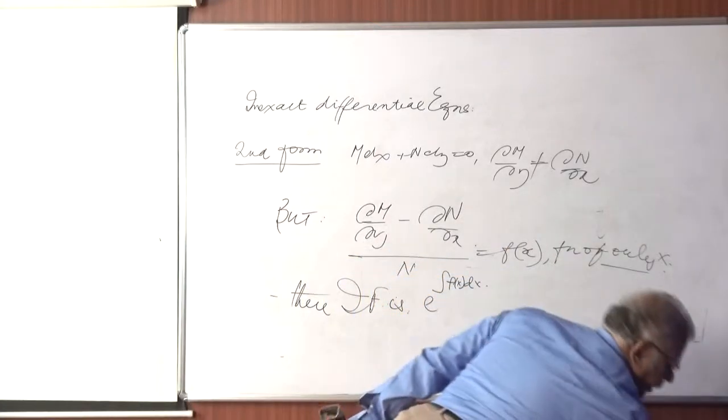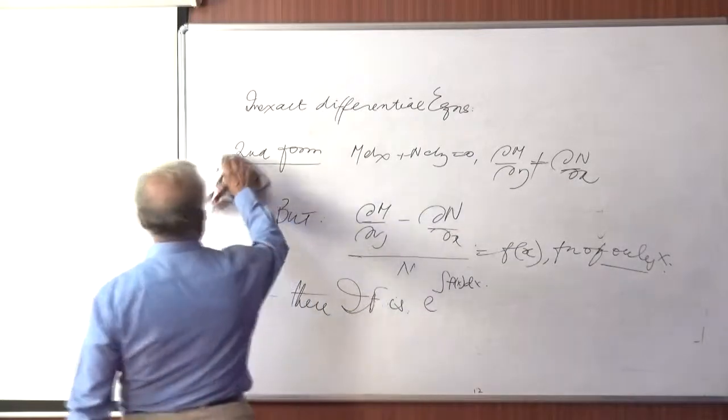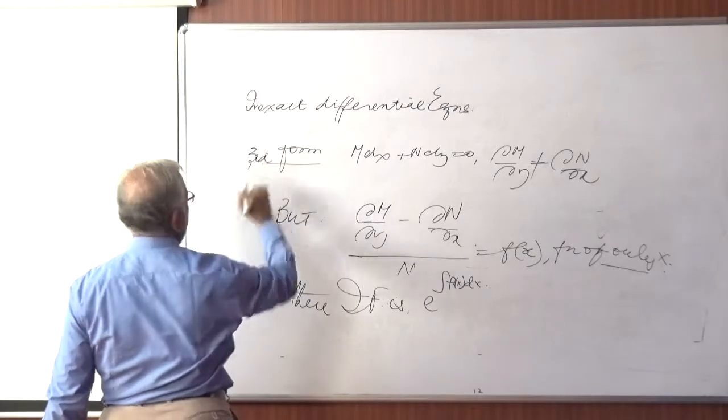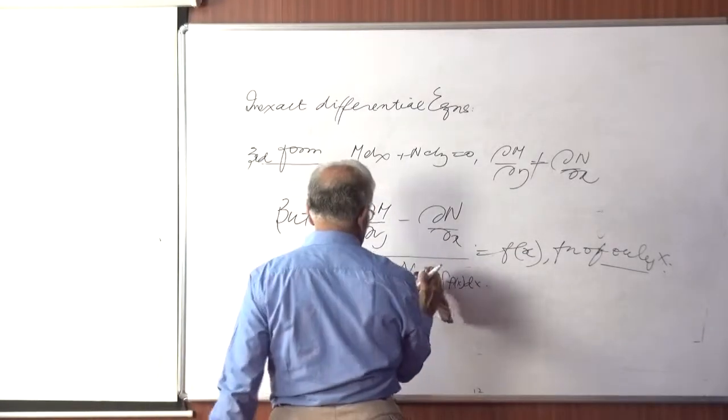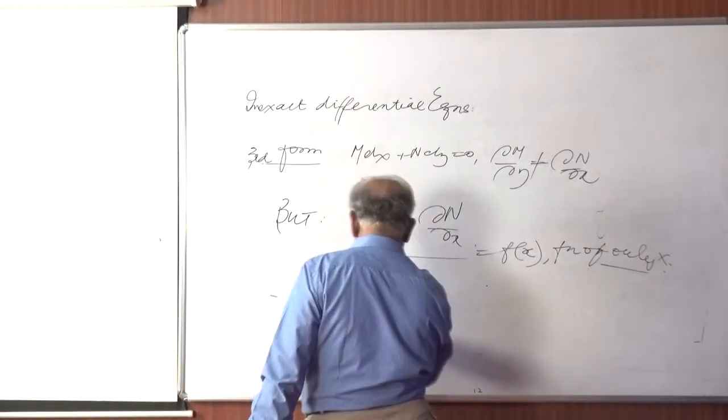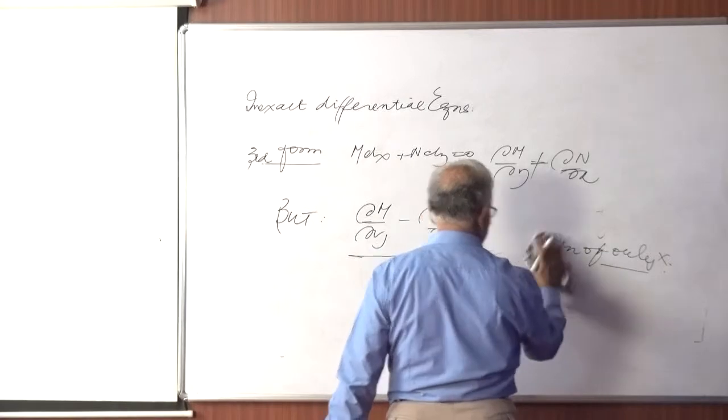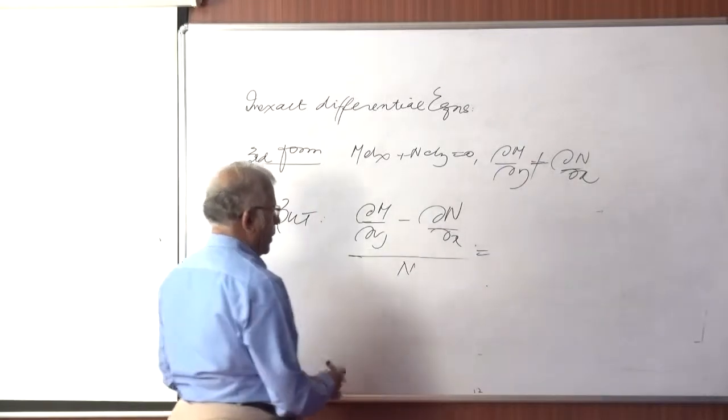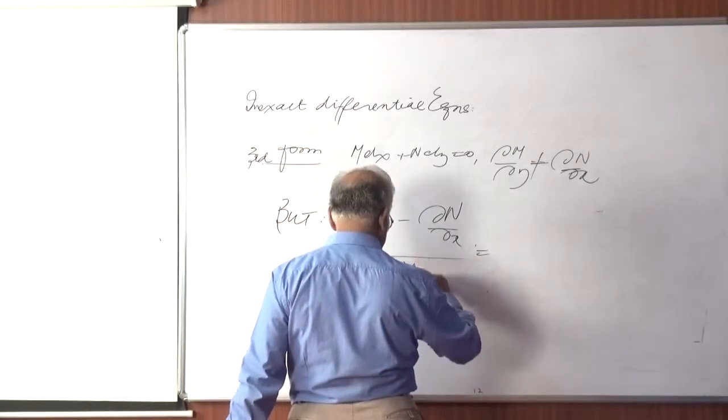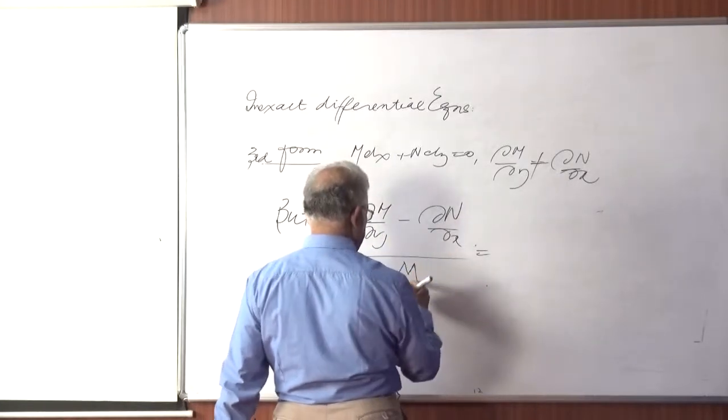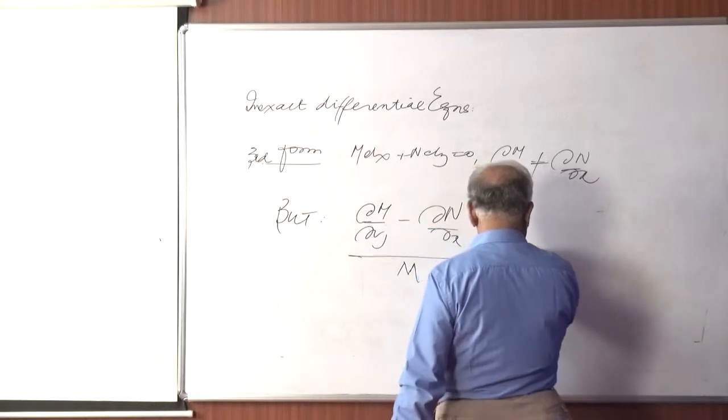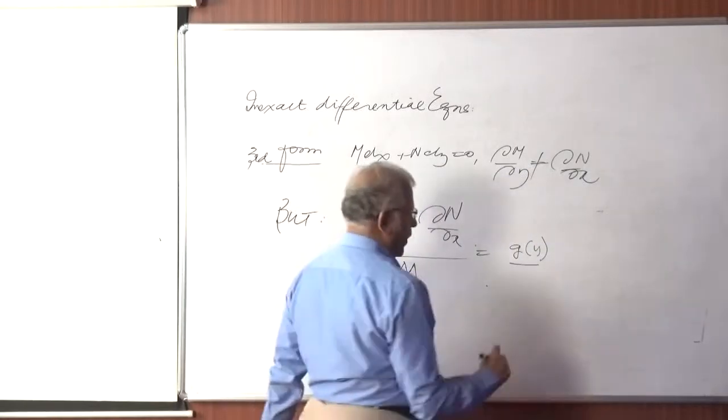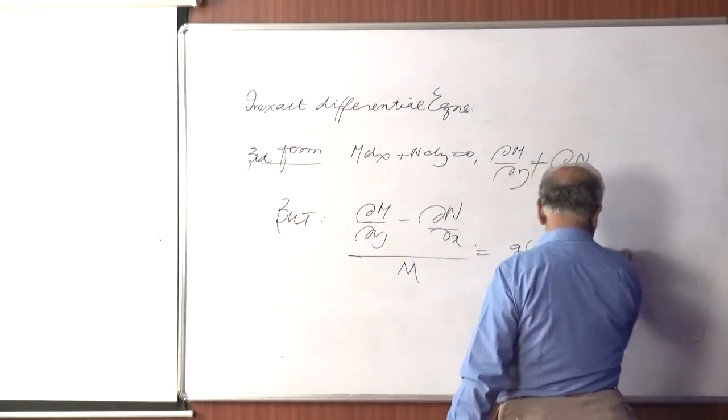The third form is very similar. So we just replace this to third form. And we find that (∂m/∂y - ∂n/∂x)/m—first it was n, now it is m—is g(y). Rather g(y), not g to the power of y, it is g(y). That means a function of y alone.